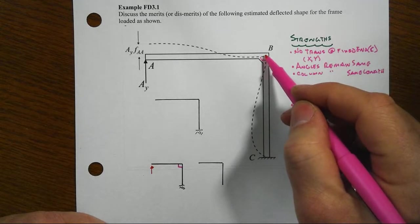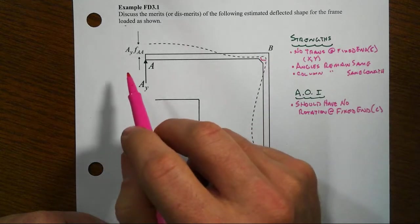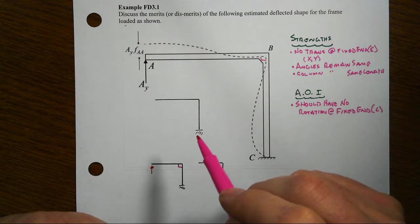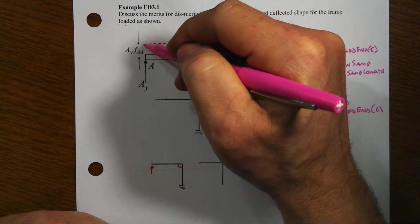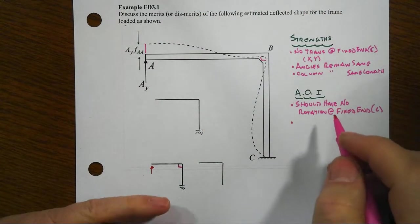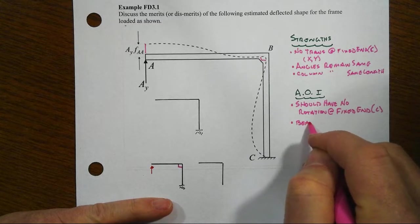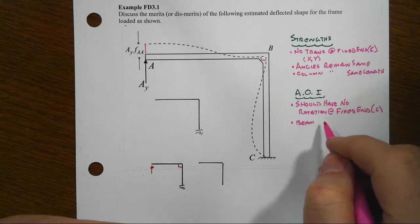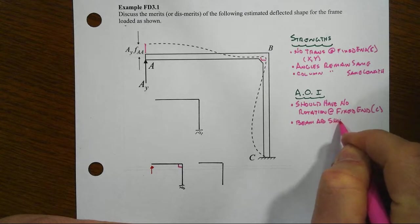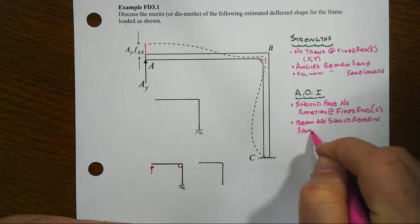When we go look at the beam, the beam goes from A to B, and over here at B, B doesn't move left to right or up and down, so if that's the case, then A, when it displaces, should not move up and down. And it does look like there might be some very slight movement there, so it's pretty close, but I'd still say that the beam appears to have shortened, and it really should not have. So the beam AB should remain the same length.